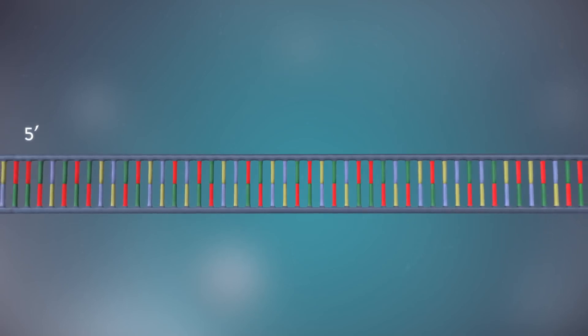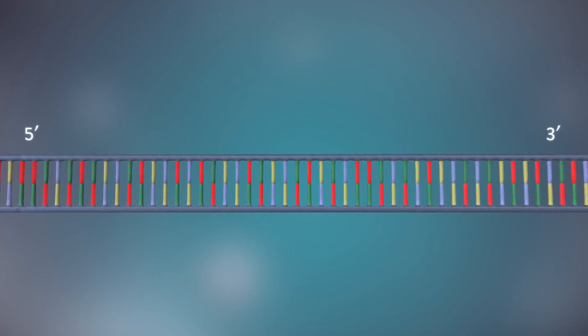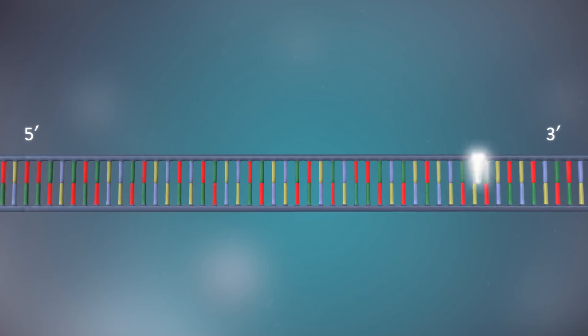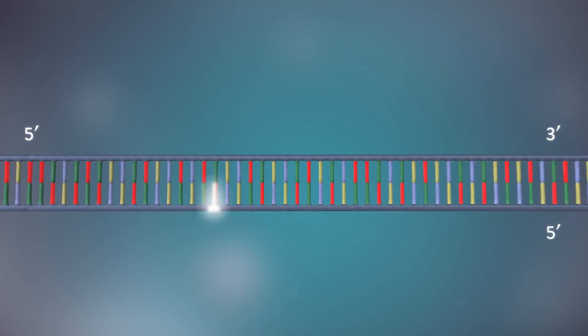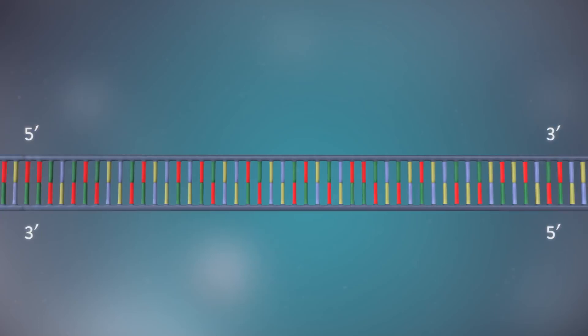Each strand has a 5' end and a 3' end. The two strands run in opposite directions. This determines how each strand of DNA is replicated.